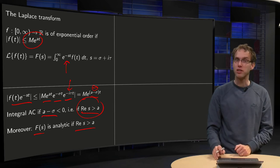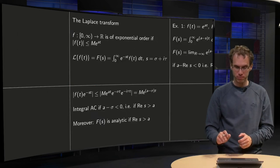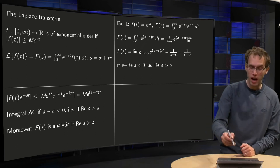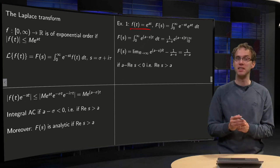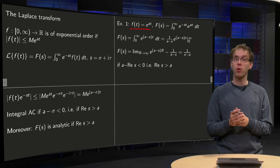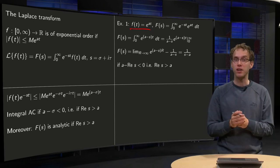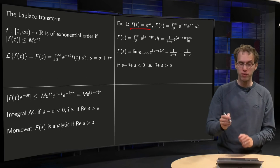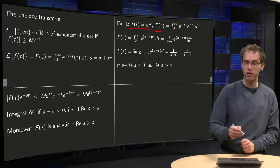Let's take a look at some examples, so what will this a become for example. First example, f(t) equals e^(at). Obviously of exponential order is exponent a, and capital M is in this case 1. So what do we get for your Laplace transform capital F(s)?